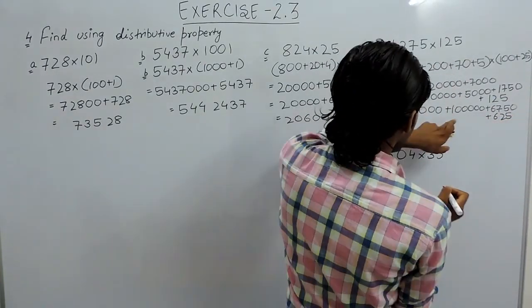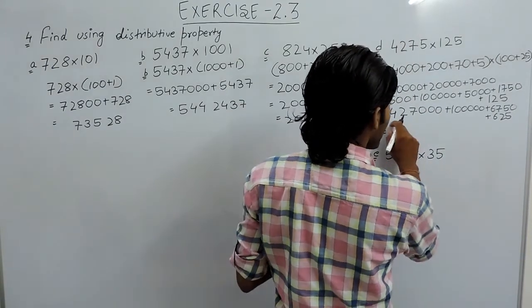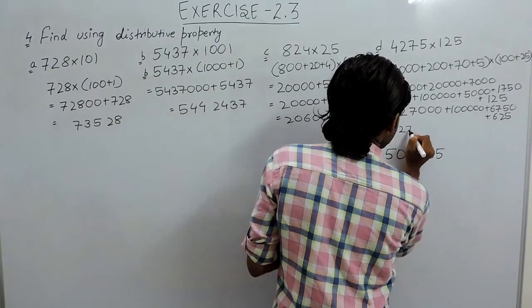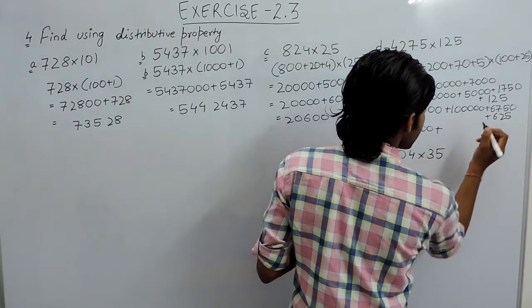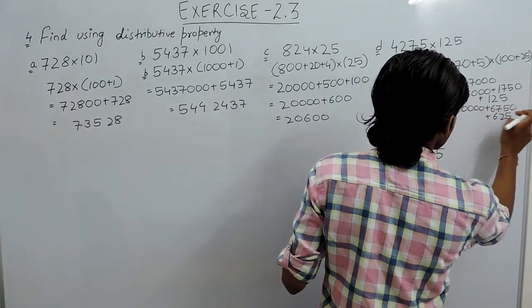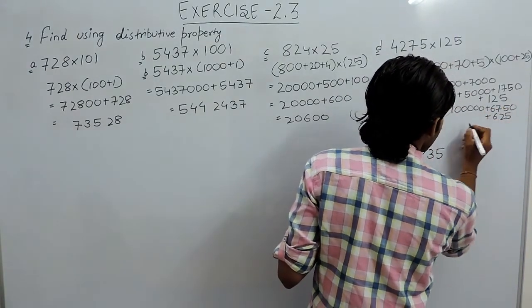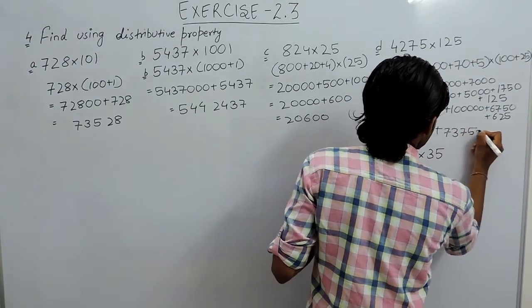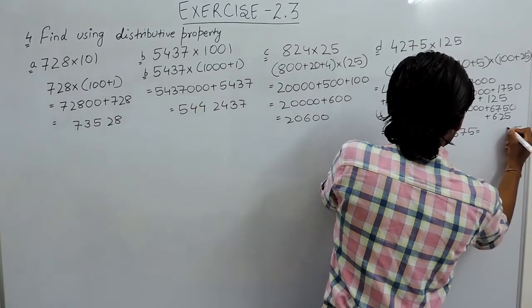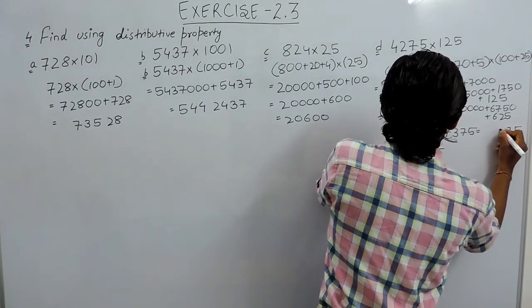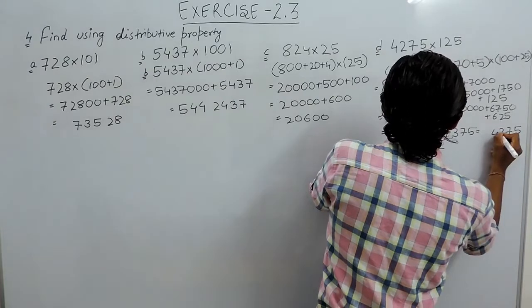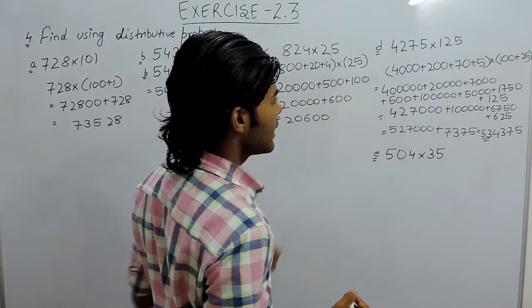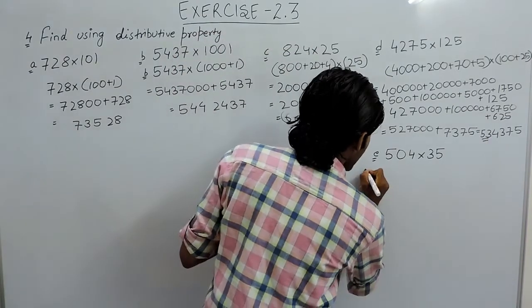So here it will be on addition, 4 lakh plus 1 lakh is 5 lakh, plus 27000, plus this is 6750 plus 625, so that will be 5, 3, 7, 3, 7, 5. The required answer will be 534375. This is the required answer of part D.